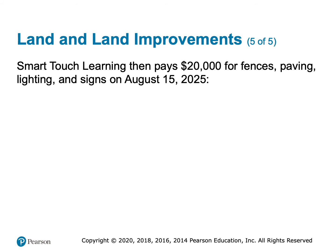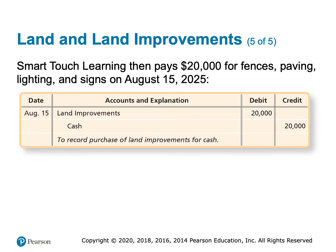We're then told we paid an additional $20,000 for fences, paving, lighting, and signs. These are also capitalized, but to the land improvements account, with cash credited. So the $62,000 in the land account will not be depreciated, but the $20,000 in the land improvements account will be depreciated.